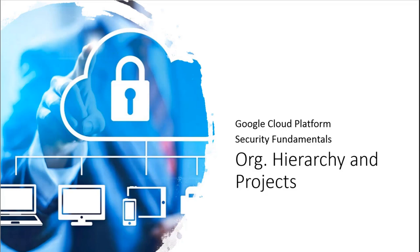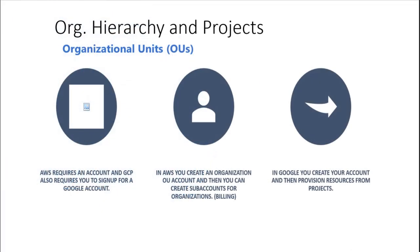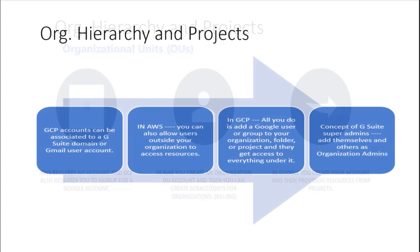Let's talk about organizational hierarchy and what projects are. We're going to focus on how projects, organizations, folders, and resources all come together in Google Cloud, particularly the security capabilities and best practices around managing them. When we think of an organizational unit, things work a bit differently in Google than in AWS. In Google, you create an account and provision resources from a project, whereas in AWS you create an org unit and then create sub-accounts from that.